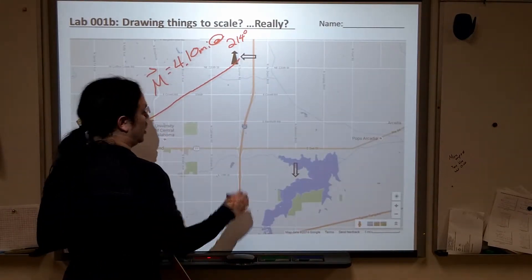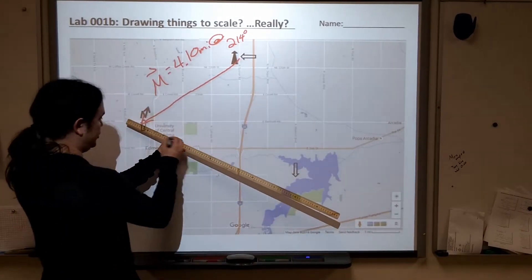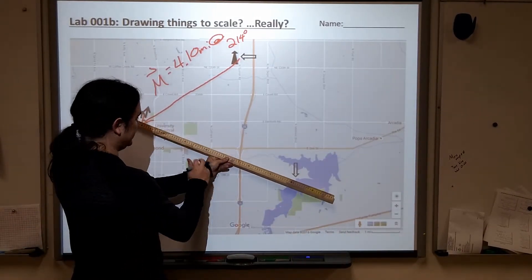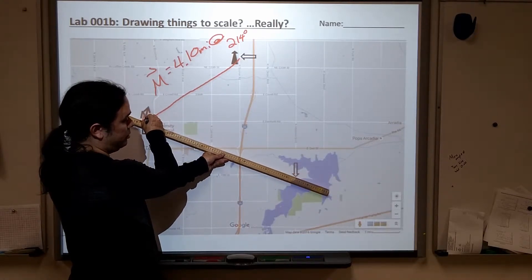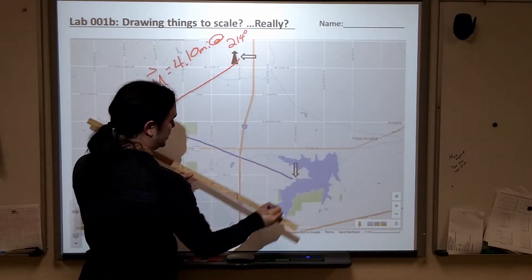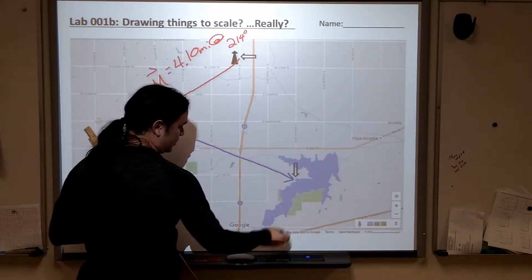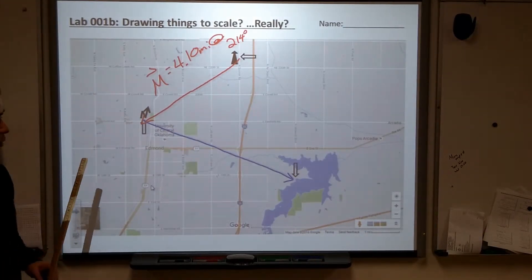We have M. Now according to our predictions, what we did on the page, we said that M should be 4.10 miles at 214.1 degrees. 214 degrees. All right.